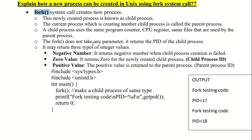The fork system call returns an integer value. Three types of integer values can be returned. If the returned value is a negative number, the child process creation has failed. If the returned value is zero, it returns the child process ID to the child. If the returned value is a positive value, it returns the parent process ID. We will see the implementation of the fork system call, which is available in the description box.